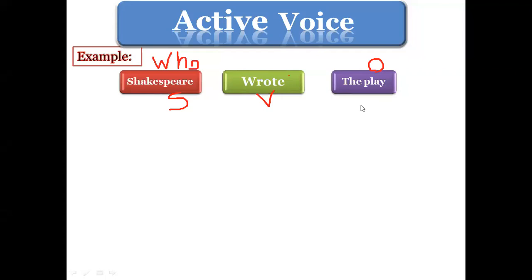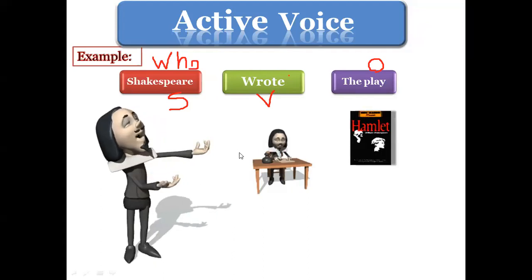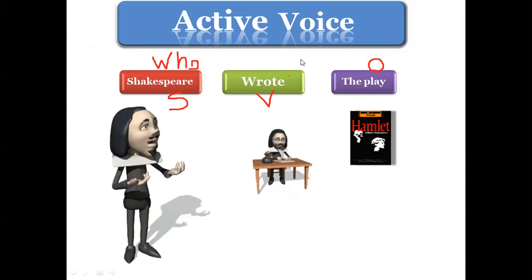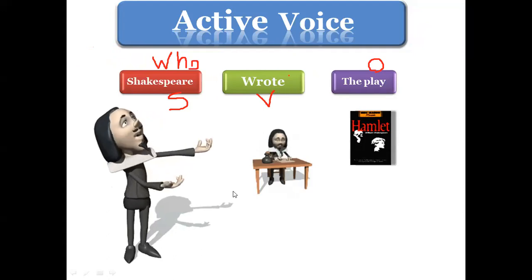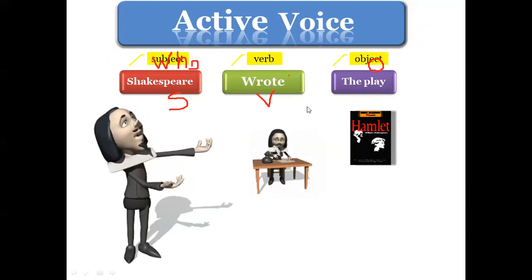We convert the sentence into passive. Let's focus. Shakespeare wrote the play — so we have: Shakespeare is the subject, 'wrote' is the verb, and 'the play' is the object. Now we want to change this sentence from active into passive.